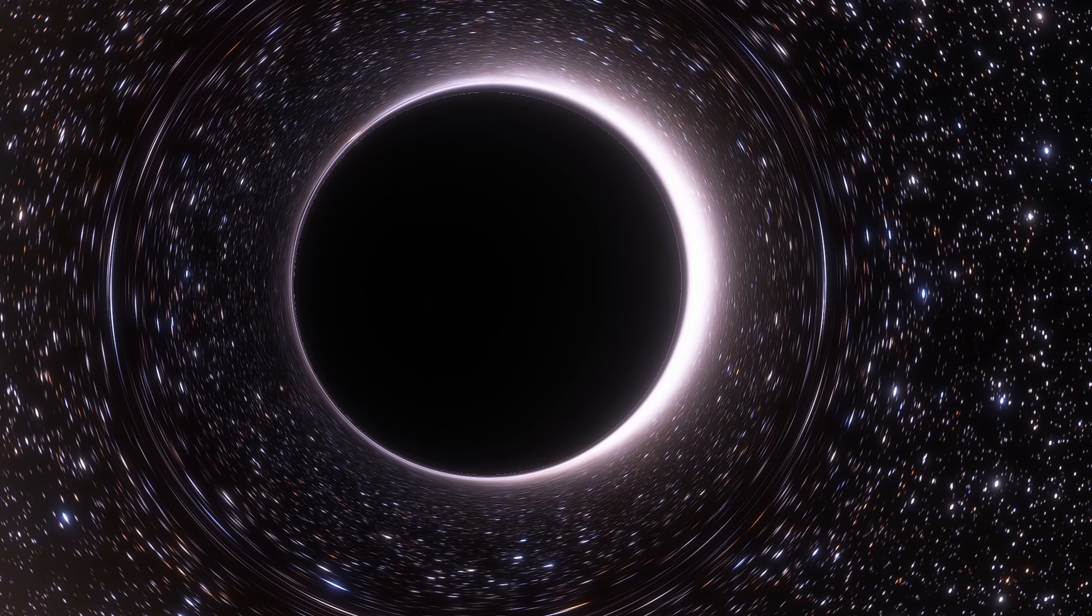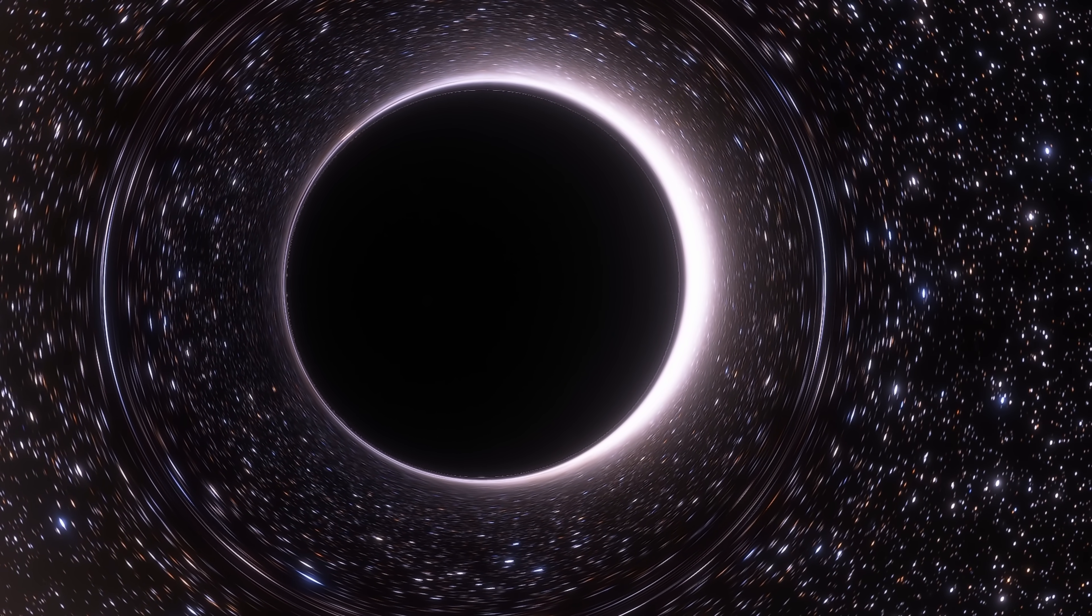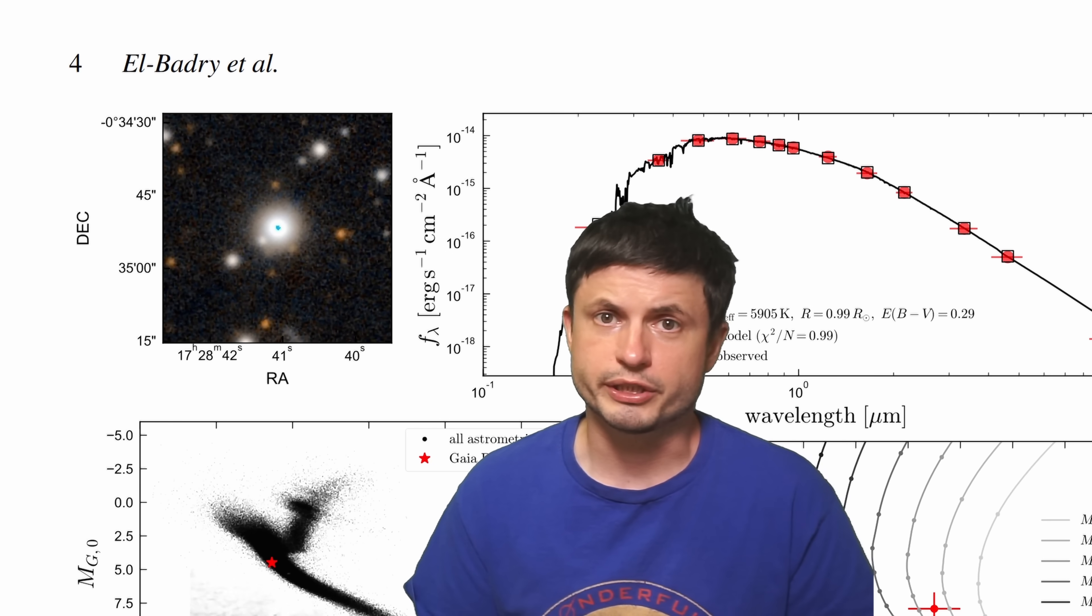We know that binary systems are pretty common, and the black holes seem to be relatively common as well. There should be a hundred million of these objects in the Milky Way. And so if they've investigated 160,000 stars, I mean, technically you should expect more. And so maybe a new mystery to be solved in some of the future studies.